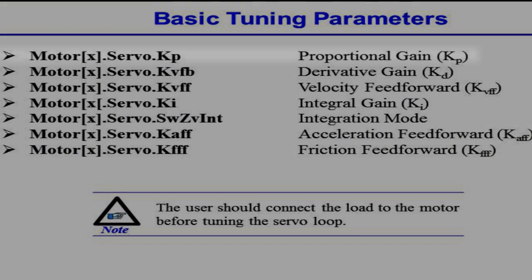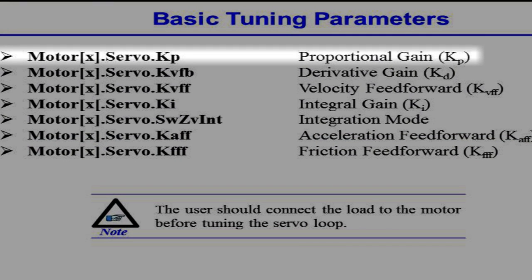The first parameter is the proportional gain, kp. This gain directly multiplies the motor's following error. It is directly related to the bandwidth, or the closed loop natural frequency of your system, which dictates how quickly you can move the motor. Increasing kp will cause your motor to respond more rapidly to changes in commanded position, but setting it too high can cause your motor to oscillate dangerously.